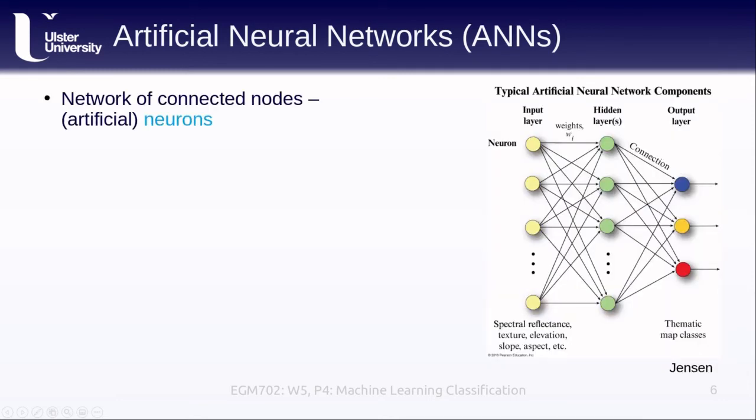This is a network of different connected nodes that can communicate with each other or transmit signals to each other, and each of the different nodes is known as a neuron. This is based on how we understand human brains to actually function, where we have different neurons communicating with each other.